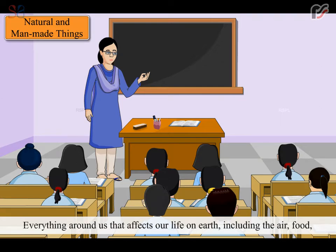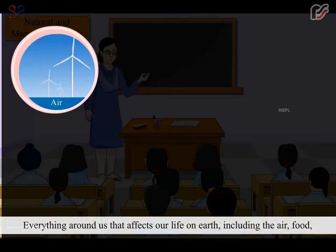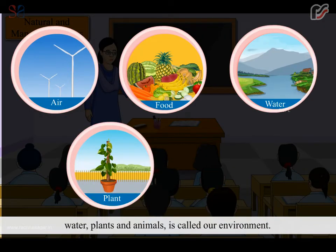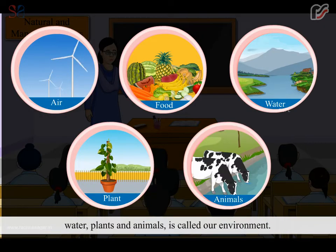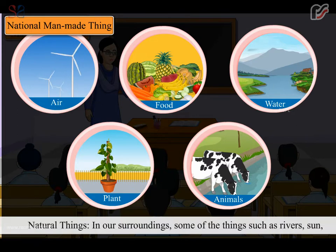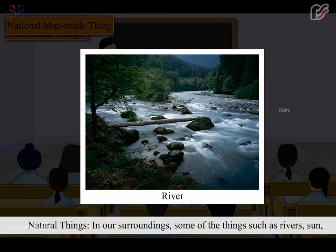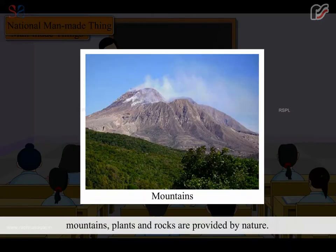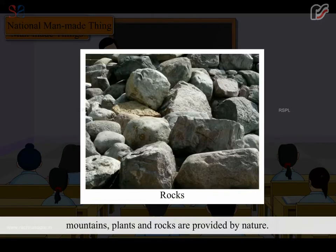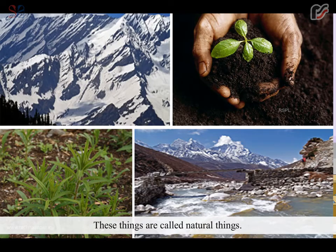Everything around us that affects our life on earth, including the air, food, water, plants and animals, is called our environment. In our surroundings, some things such as rivers, sun, mountains, plants and rocks are provided by nature. These things are called natural things.